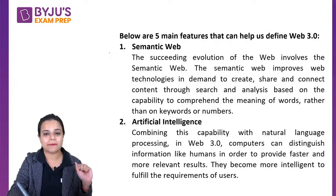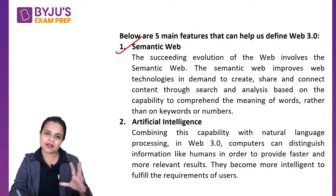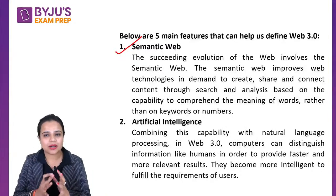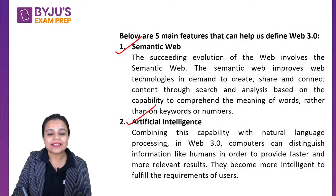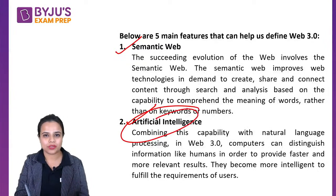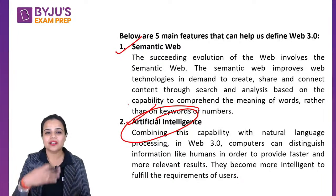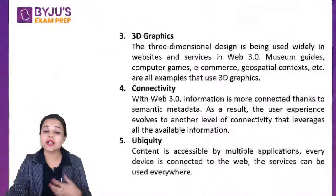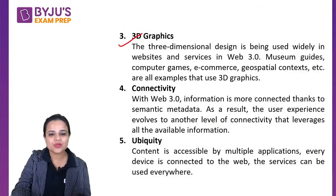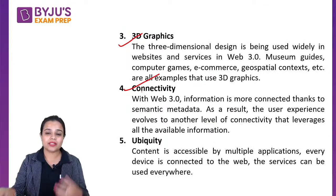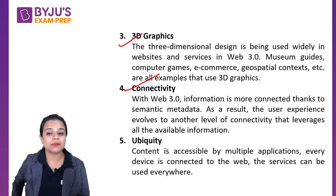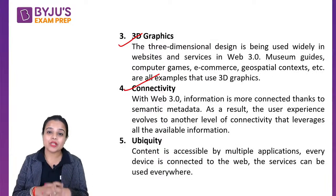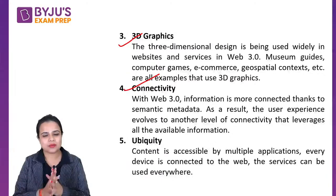Web 3.0 has five features important for exams. First, it is the Semantic Web — about how we have structured the web semantically, creating schemas and databases from Web 1.0 and 2.0. Second, Artificial Intelligence is used — AI became prominent, including voice recognition like Siri, and VR. Third, 3D graphics are used. Fourth, connectivity — we are more connected through semantic metadata. Fifth, ubiquity — accessible by everyone, anywhere, anytime.